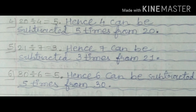Hence, 4 can be subtracted 5 times from 20. This means 4 can be subtracted from 20 five times. Number 5: 21 divided by 7 is equal to 3. If we divide 21 by 7 the answer is 3. Hence, 7 can be subtracted 3 times from 21. This means we can subtract 7 three times from 21. So we write 'Hence', then 7 — the divisor — then 'can be subtracted', then the answer 3, then 'times from', then 21.